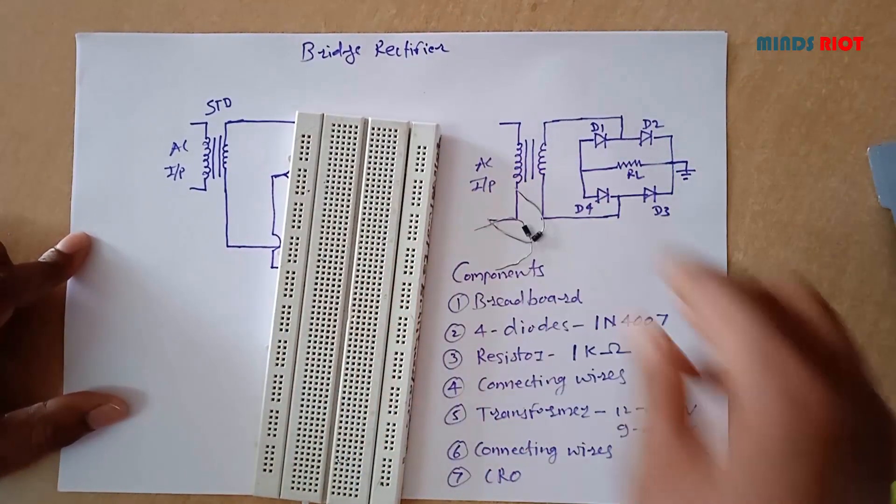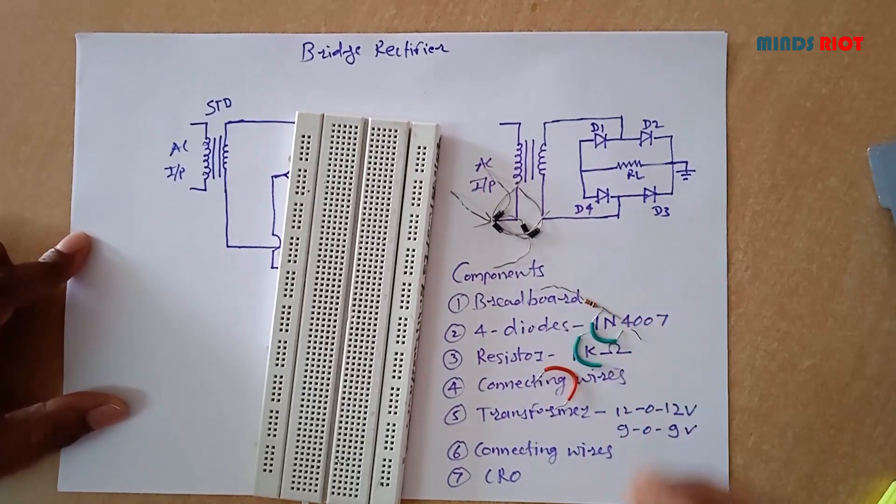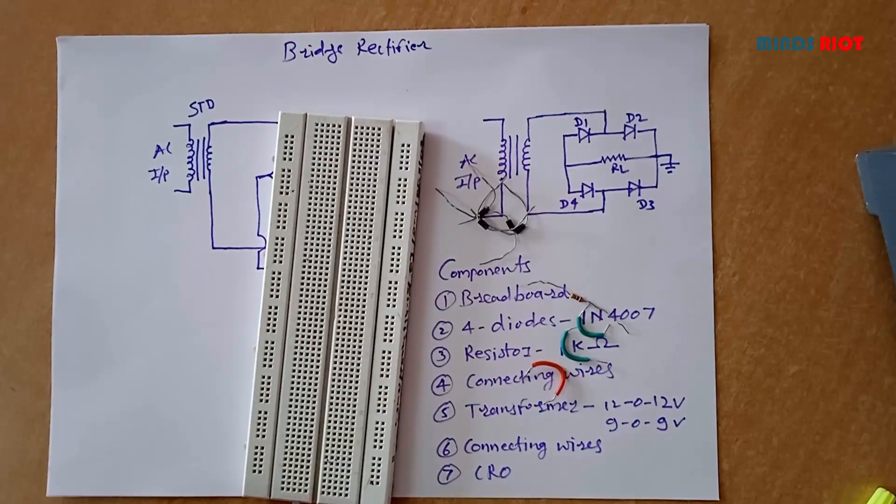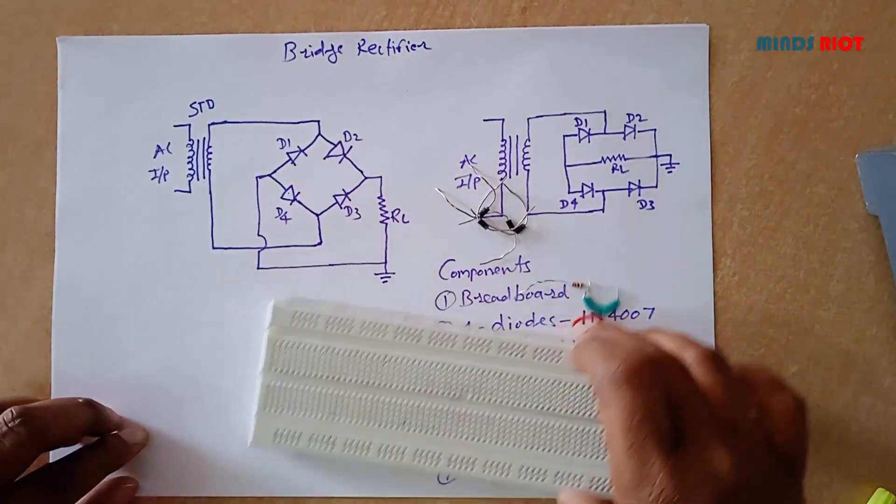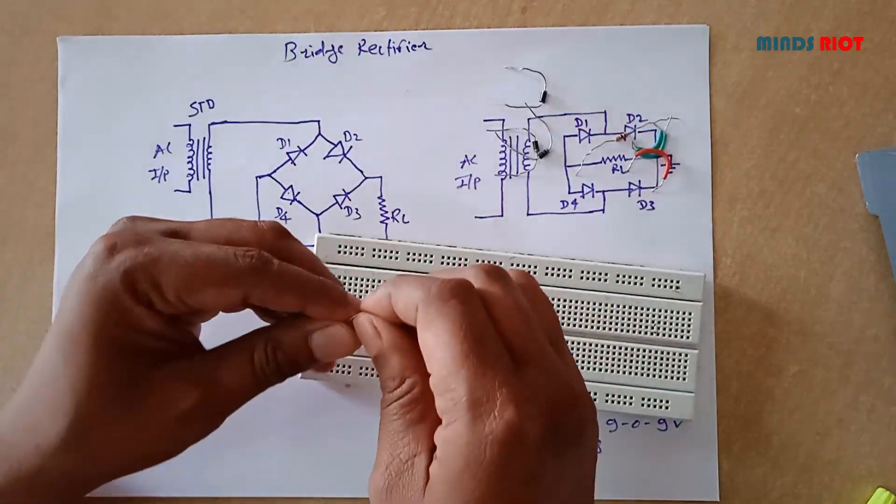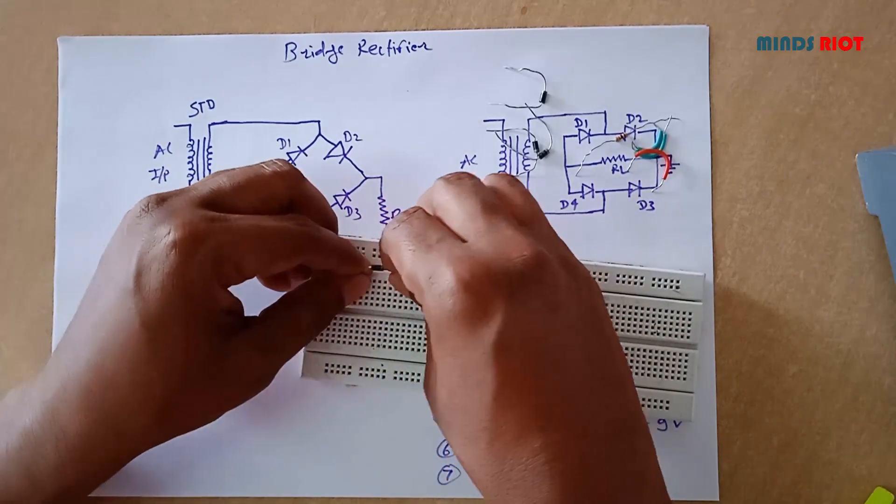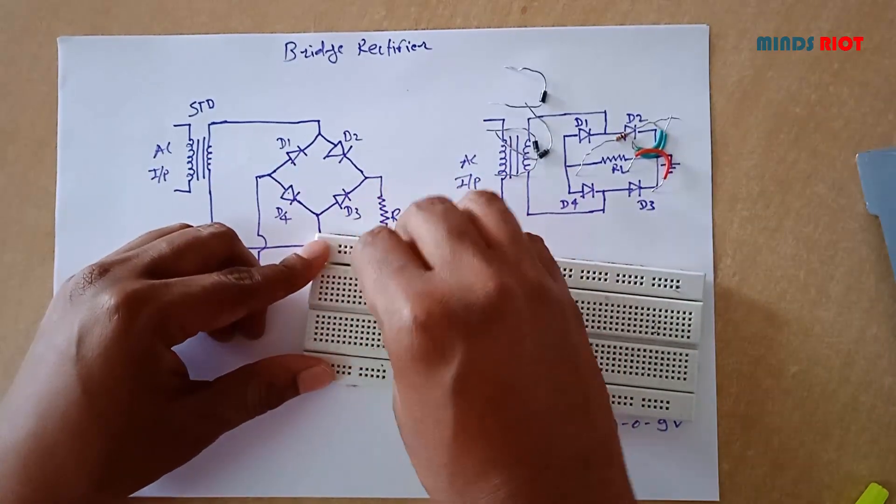This is the breadboard, diodes, then resistor of 1K and connecting wires. Now implementing circuit on breadboard. Silver ring on diode indicates cathode, that is negative.